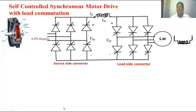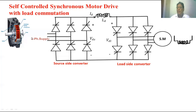Now, if we want to apply regenerative braking for the synchronous motor, the load side converter will be operated as a rectifier, so the firing angle of this converter becomes less than 90 degrees. The source side converter will be operated as an inverter. Whatever power is given by the synchronous motor that is available to the DC link will again be given back to the supply. In this manner we can apply regenerative braking for the synchronous motor.